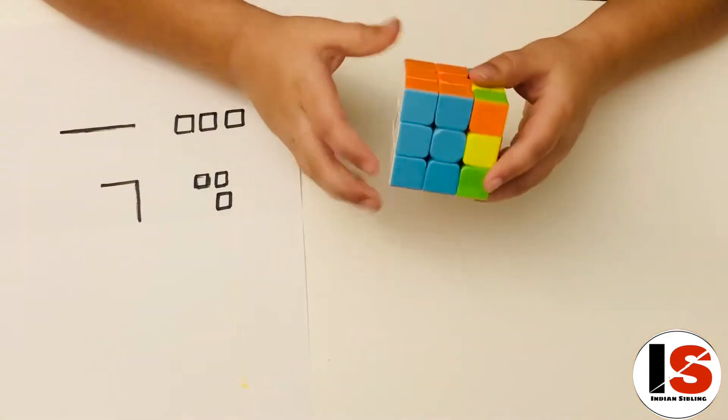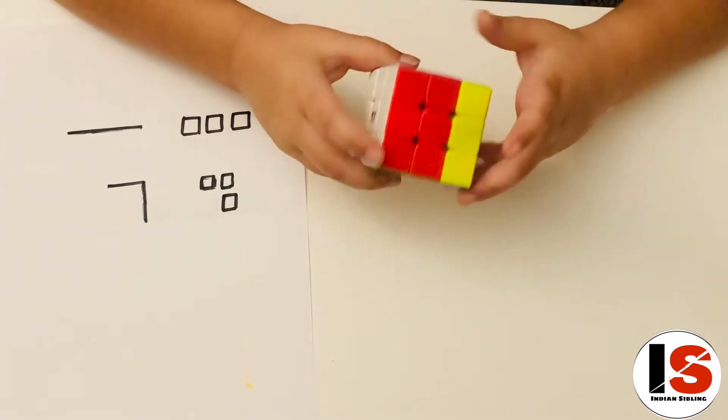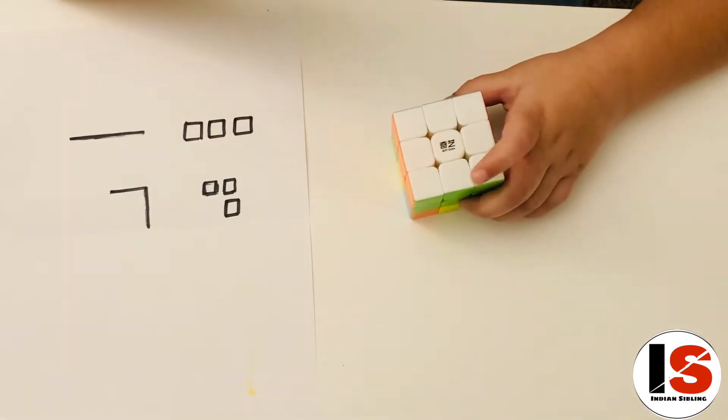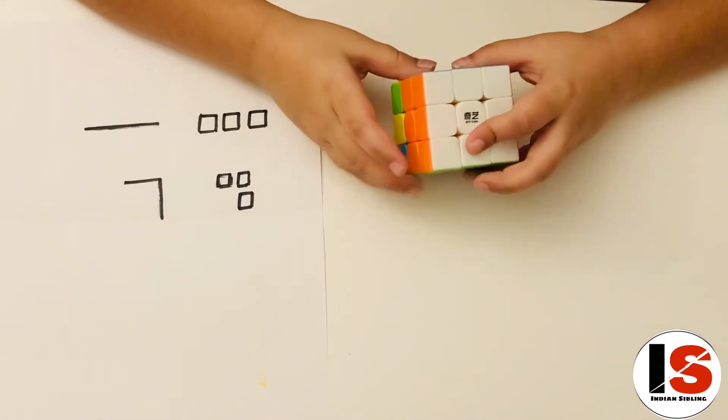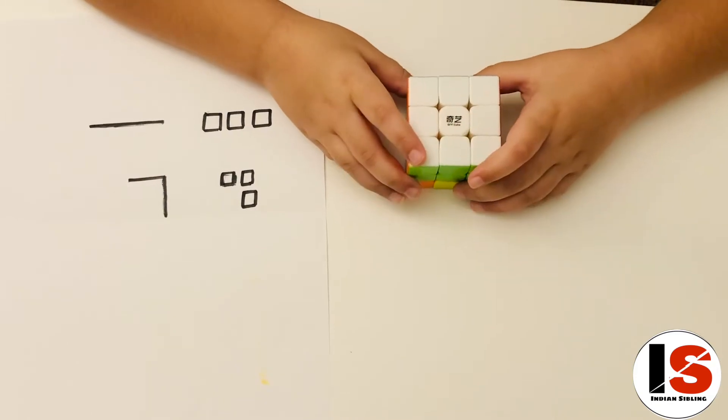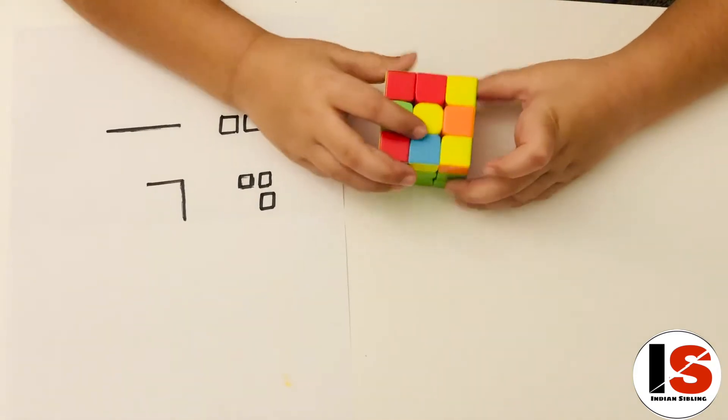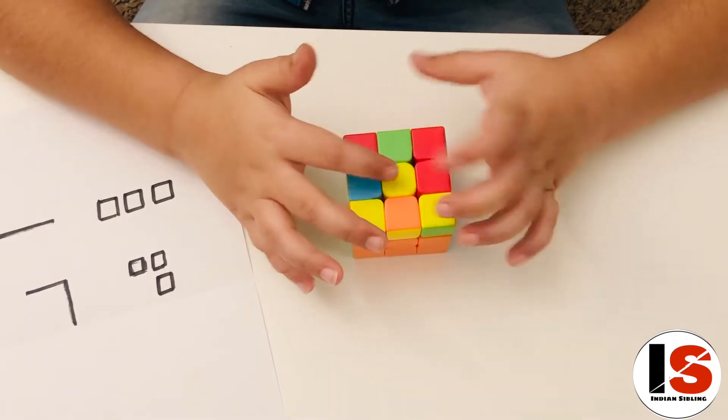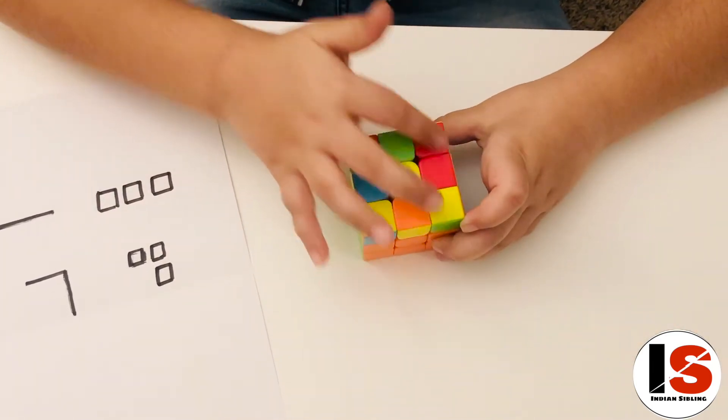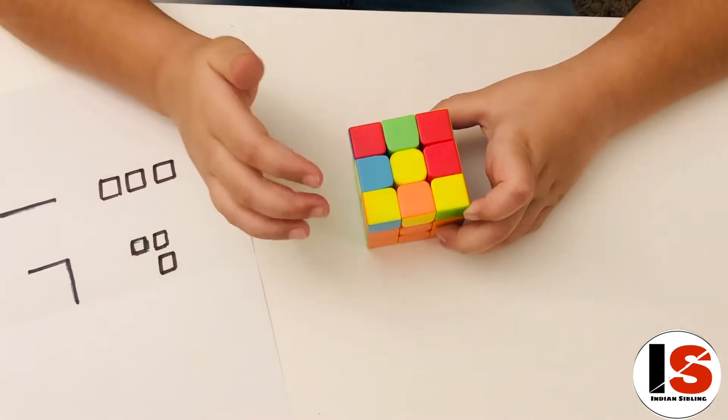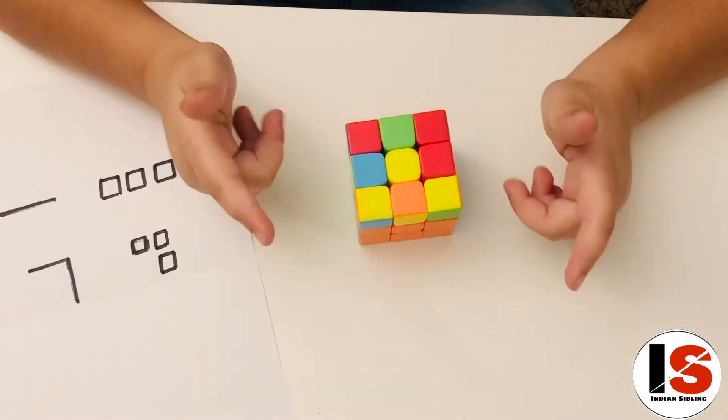As you can see, our second and first layer has been solved. Now let's solve our third layer. In order to solve your third layer, you have to flip your cube around. See, the center of our top layer is yellow, so of course the surface has to be yellow.